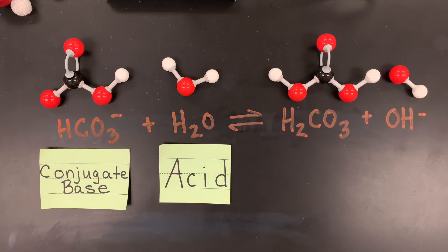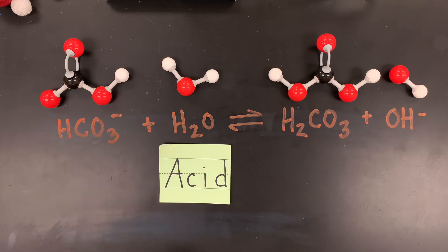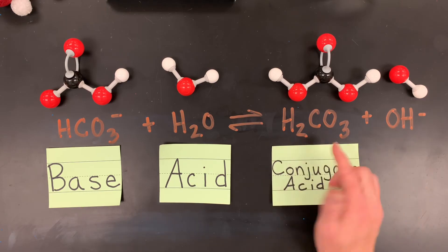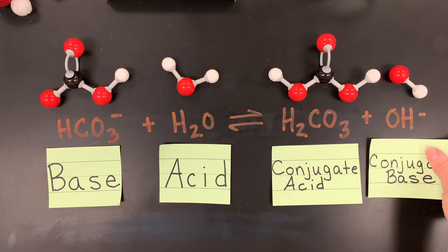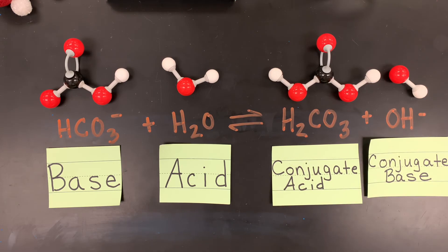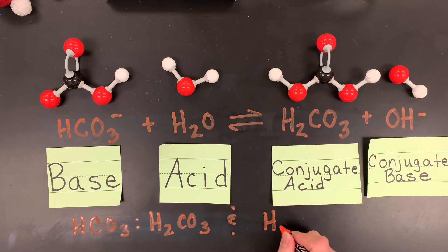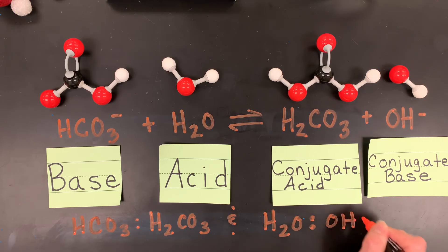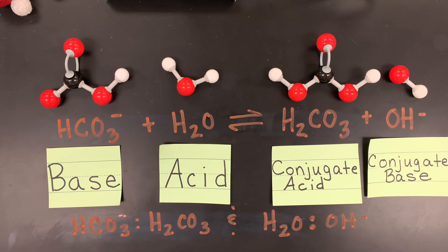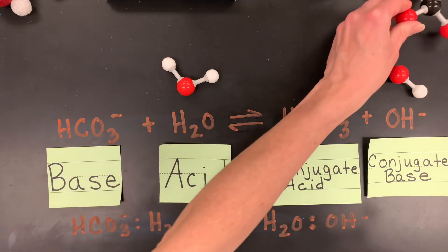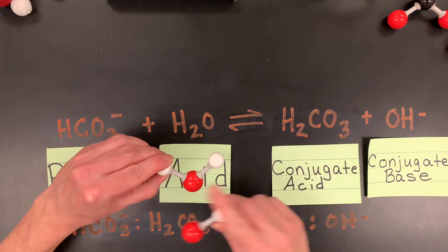So the base here is bicarbonate and it accepts the hydrogen ion. The base has a conjugate acid — H2CO3, carbonic acid, which is a diprotic acid. And water as the acid has a conjugate base of hydroxide. So HCO3⁻ pairs with H2CO3, and H2O pairs with hydroxide. Look how there's one proton or one hydrogen ion different in each pair.